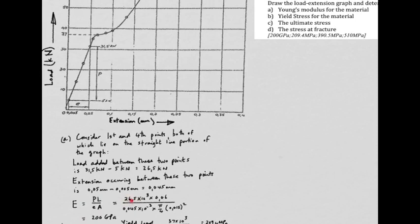During that time, the extension changed by 0.045 millimeters. Use those in your E equals PL over EA formula. There's the load, which is the change in load times the gauge length divided by the extension between those two points, and of course the cross-sectional area, and you come out at 200 gigapascals.